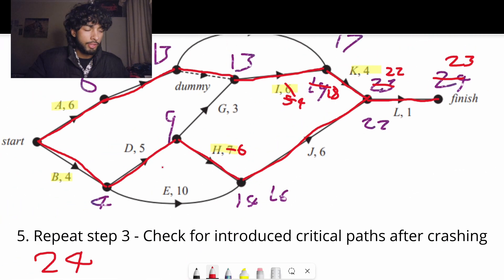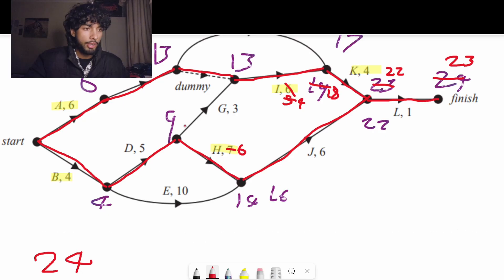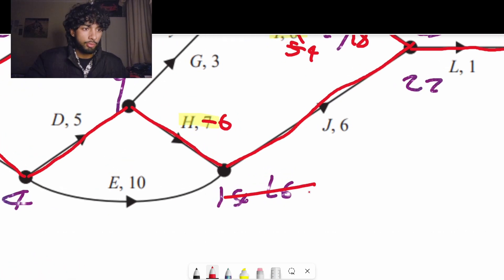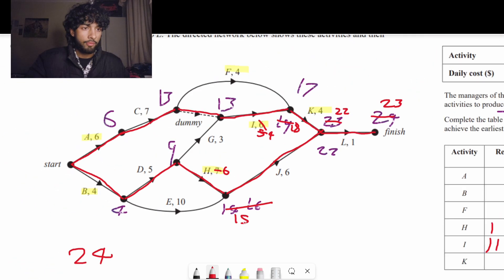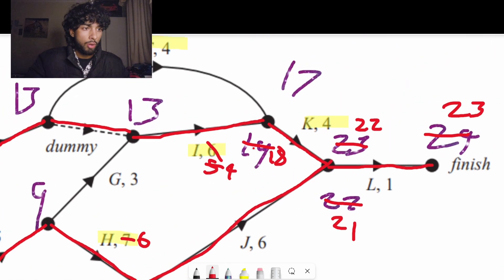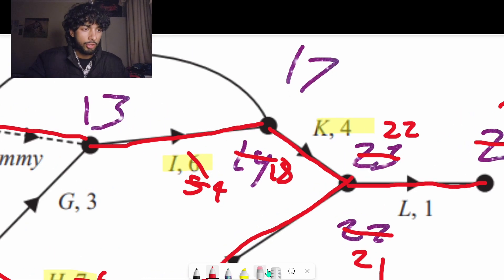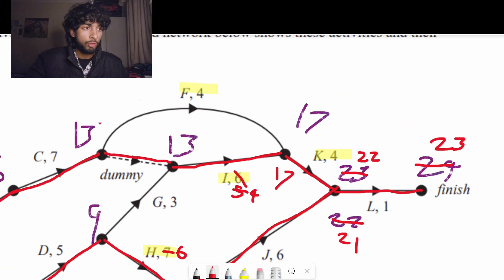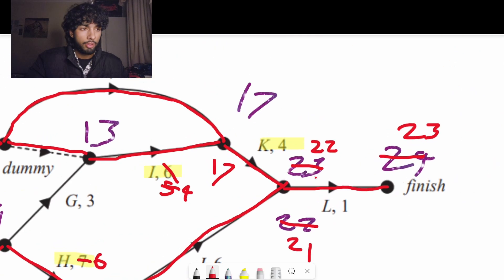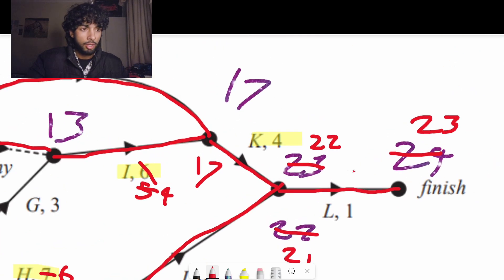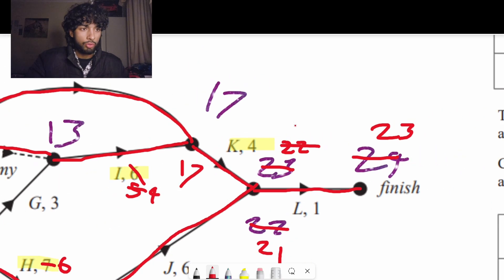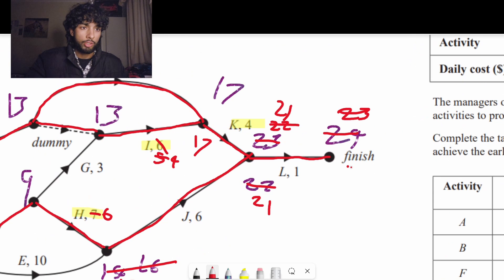So I'll put in my tally marks h and i. Let's reduce these things by one day. So how does this affect the overall completion time? 15 plus six, 21. And at the top, 13 plus four is now 17. What we also notice is that there's a 17 at the top here, which means that this path is now introduced as a critical path. And now the overall completion time is 22.